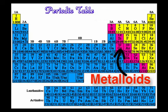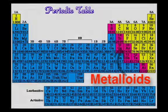Metalloids, also called semiconductors, are the elements that border the zigzag line on the periodic table. Atoms of metalloids have about a half-complete set of electrons in their outer energy level. Metalloids have some properties of metals and some properties of nonmetals.